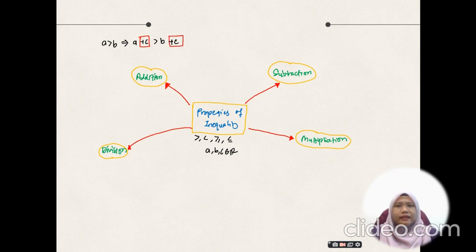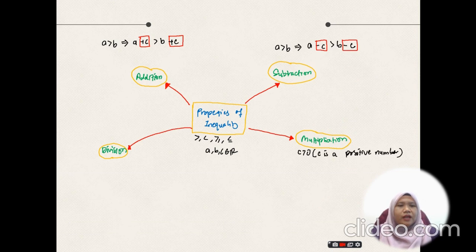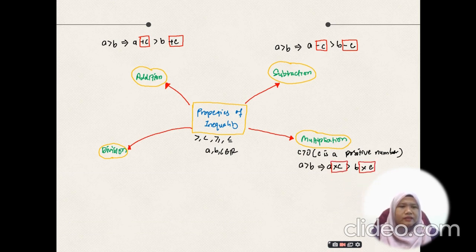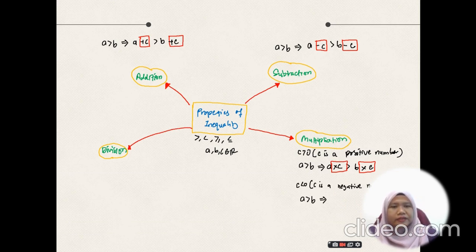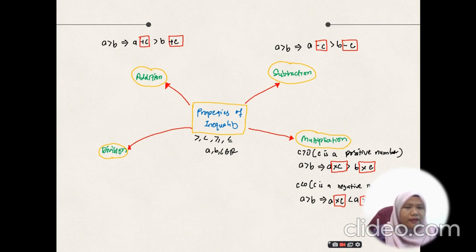We have plus C on the left-hand side and plus C on the right-hand side. For subtraction, if A is greater than B, then A minus C is greater than B minus C, with minus C on both sides. For multiplication, if we multiply by C where C is a positive number and A is greater than B, then A times C is greater than B times C. But it's a bit different when C is a negative number: if A is greater than B, then A times C is less than B times C. The sign changes from greater than to less than.